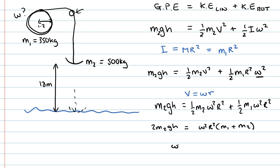So our expression for omega will be the square root of 2M2gh divided by R squared times M1 plus M2.